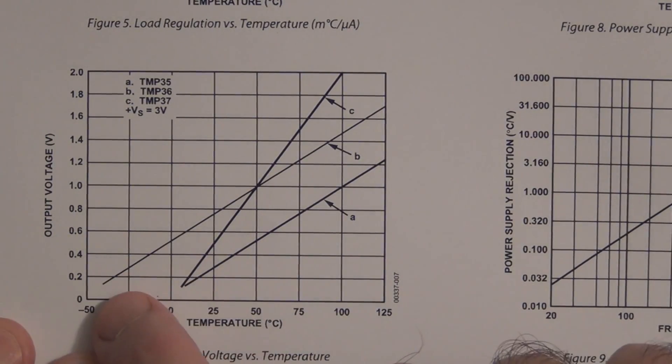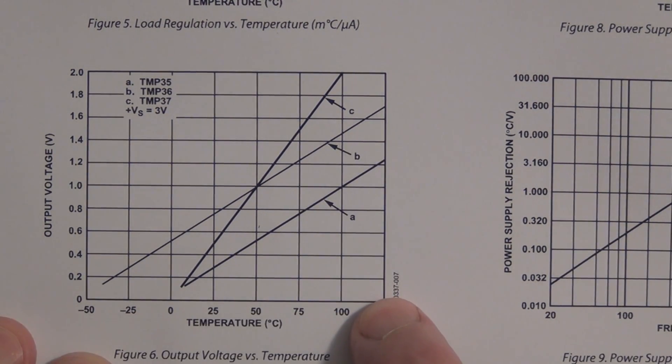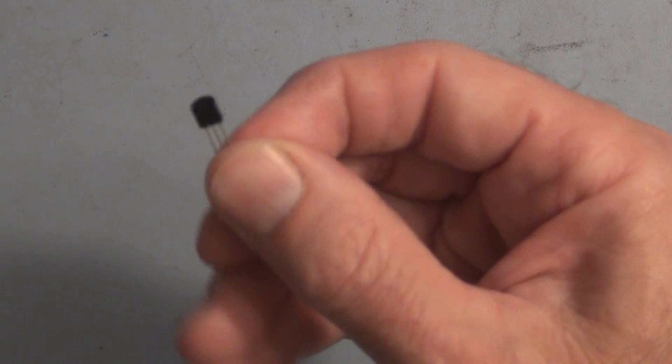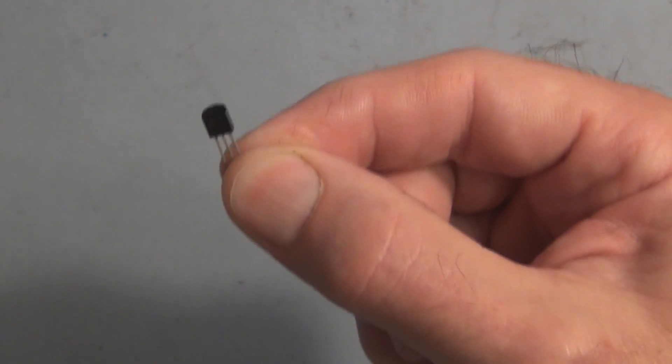You can see here it's a linear output voltage as the temperature increases. This is the output voltage here. So this TMP36 produces an output voltage. It doesn't produce a temperature, so then you have to interpret that output voltage.